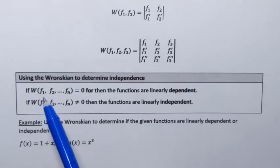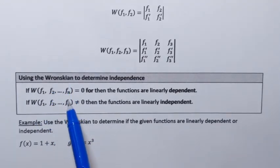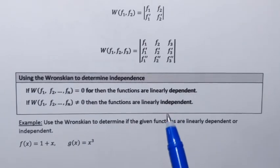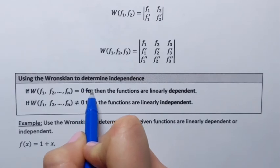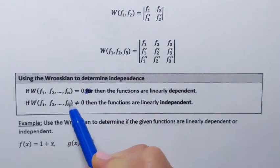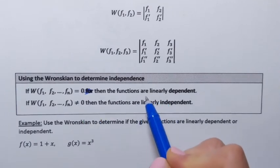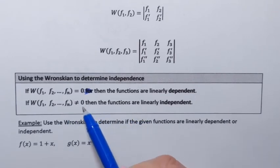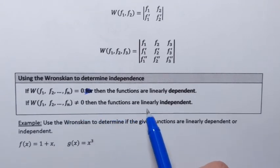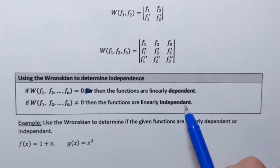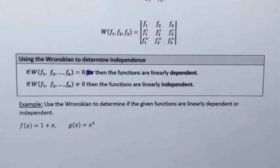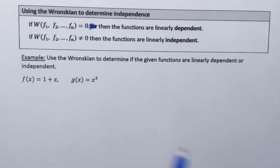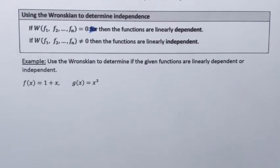Here is how we use the Wronskian to determine dependency or independency: if the Wronskian of the functions is zero, then the functions are linearly dependent. If the Wronskian is not zero, then the functions are linearly independent. Let's try an example — the best way to understand this is by applying it. We're going to use the Wronskian to determine whether a given set of two functions is linearly dependent or independent.